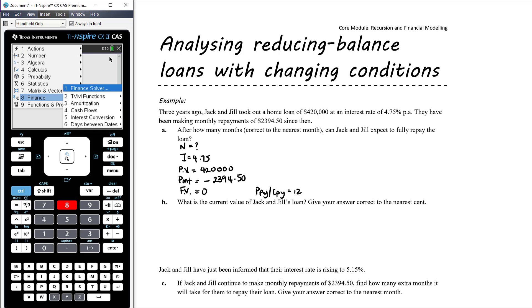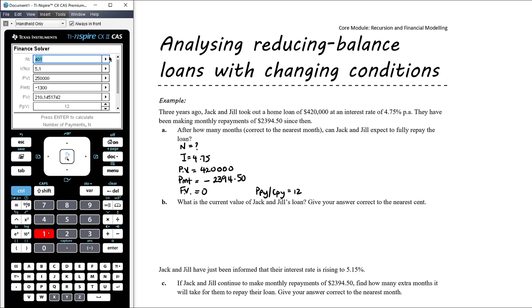Okay, so finance solver menu 81. Okay, so as I said when you open it it'll always still have the last data that you put in there and that's fine you just edit it. So I can delete, my interest rate is 4.75. My principal value is 420,000. My payment is minus 2394.5 and the future value I want to be zero. Payments per year and compounds per year are 12. Okay, so scrolling back around we're going to press enter on the n value and correct to the nearest month that's going to be 300 months.